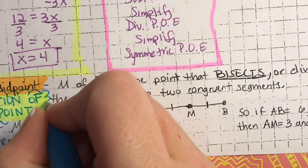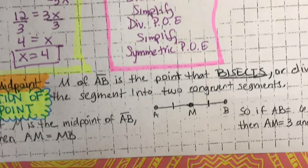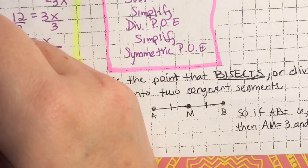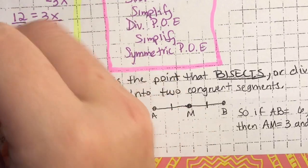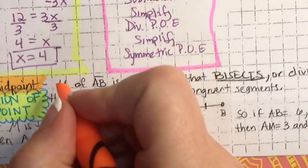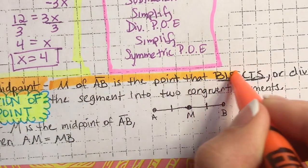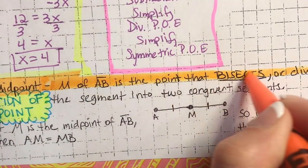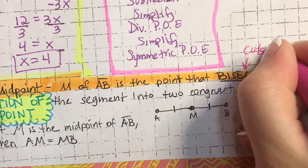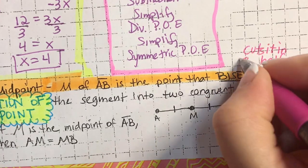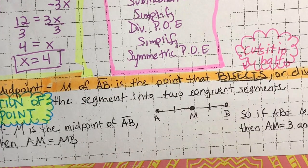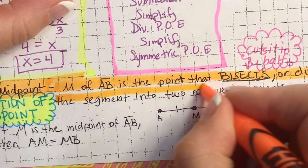You should write down the definition of a midpoint, and in a little bit I'm going to talk about a variety of equations to put under it. So, flashcard alert — this needs to be on a note card. Midpoint M of line segment AB is the point that bisects — that's a vocabulary term meaning it cuts it in half — and divides the segment into two congruent segments.